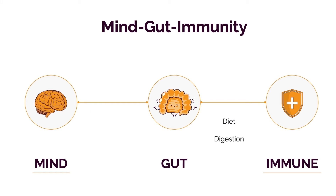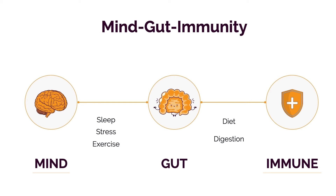Diet is roughly a third of the impact and digestion is roughly a third — combined they represent more than half. That's because most of your immune system is in your gut, and most of your genetic diversity is in your gut in the form of microbes. So what goes in your gut, what lives in your gut, and what leaves your gut determines inflammation. Simple as that.